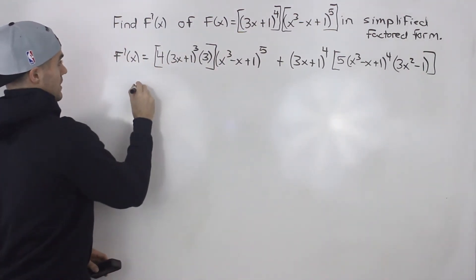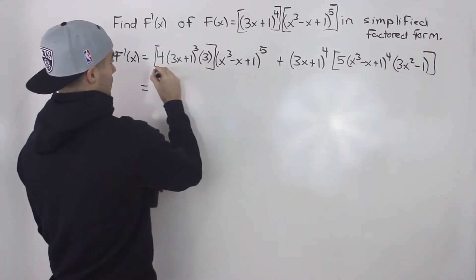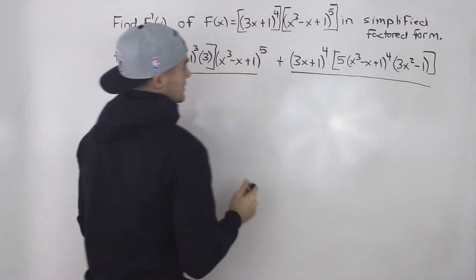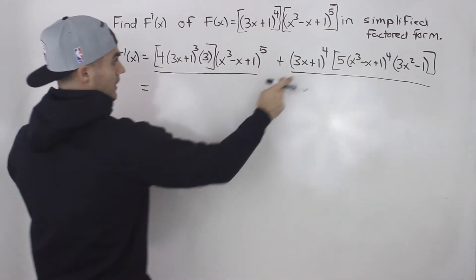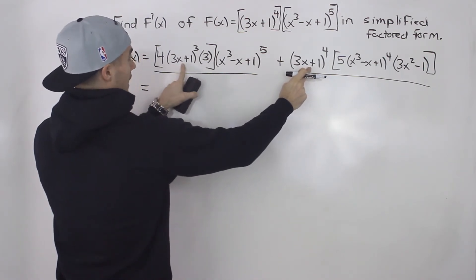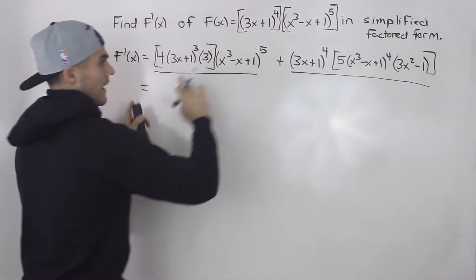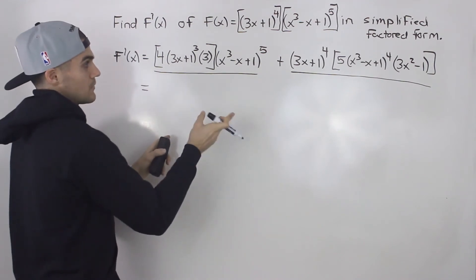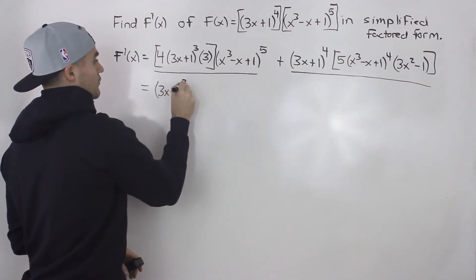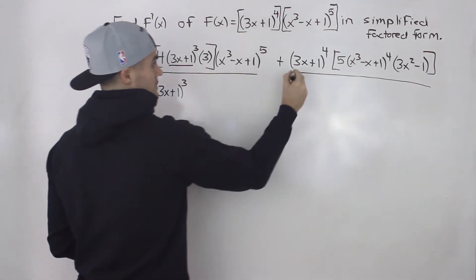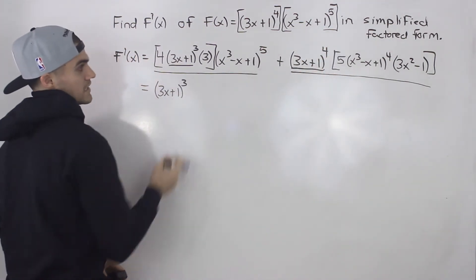We can't just leave it like this — we have to simplify. We have two terms, so let's see what we can factor from both. Notice that the bracket 3x plus 1 is common in both terms. However, one has 3x plus 1 to the power of 3 and the other to the power of 4. When factoring a common bracket, we take the one with the lowest exponent, so we factor out 3x plus 1 to the power of 3. There will be one 3x plus 1 remaining from the term that had four of them.